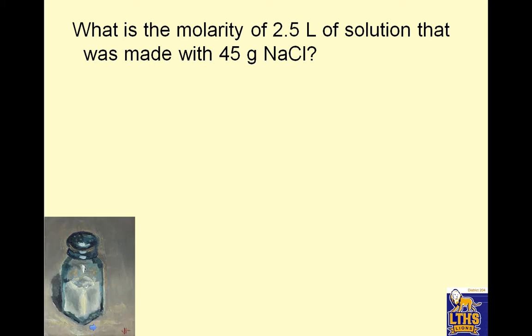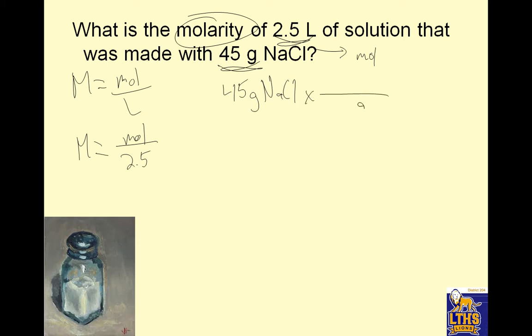What's the molarity of 2.5 liter solution that was made with 45 grams of NaCl? Whenever I see molarity, I love to write molarity equals moles over liters of solution. My molarity is what I'm solving for. That's grams, that's not moles. That's 2.5 liters, so moles over 2.5. I have two variables. I have to change that into moles. 45 grams times dividing bar, grams of NaCl, times one mole of NaCl. I go to the periodic table. Sodium is 22.99 and chlorine is 35.45, so 58.44 grams.